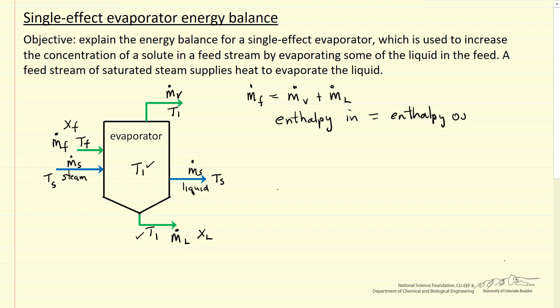Energy is coming in two ways: the flow rate of the feed times its enthalpy at the temperature of the feed, plus the mass flow rate of the steam times its enthalpy where this is a vapor.